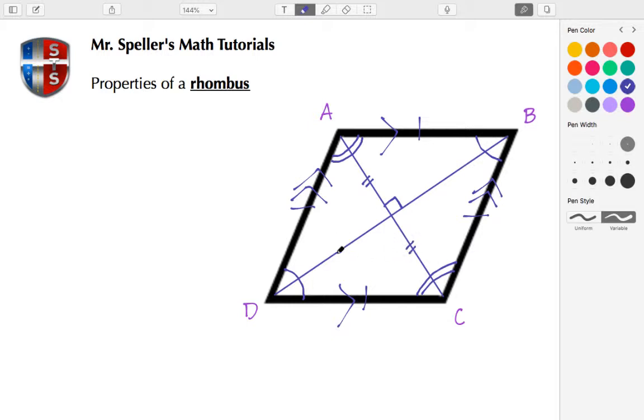And these two parts of the diagonals are congruent. We also know that the diagonals are also angle bisectors, and that means that they cut the angles in half.